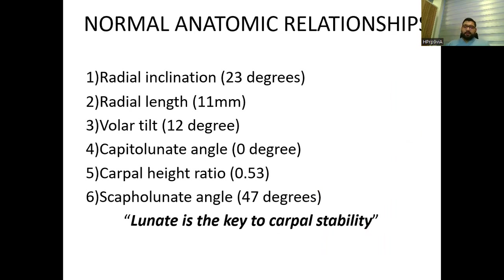These are the normal anatomy relationships one should keep in mind before reading the radiographs of the wrist joint. The radial inclination should be 23 degrees, the radial length should be 11 millimeters, the volar tilt should be 12 degrees, the capitolunate angle should be 0 degrees, the carpal height ratio should be 0.53, and the scapholunate angle should be 47 degrees. The lunate is the key to carpal stability and is one of the most important bones in the wrist joint.